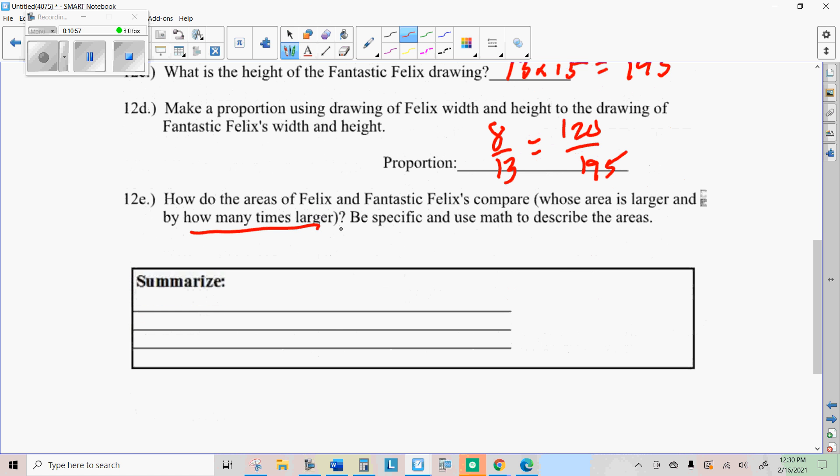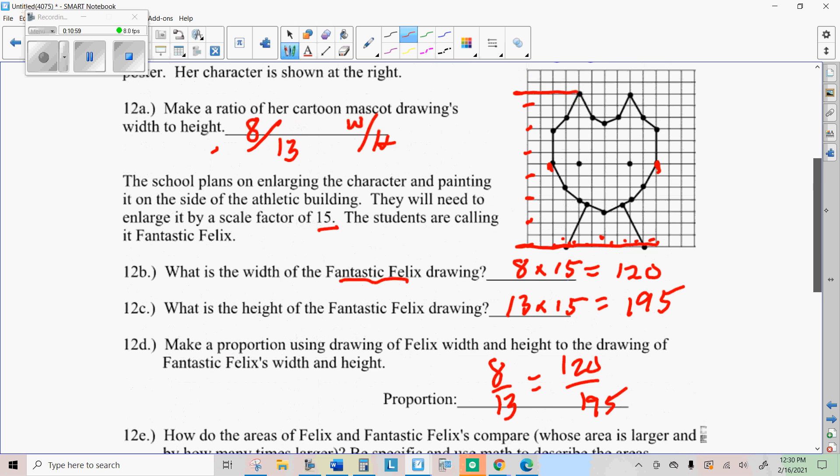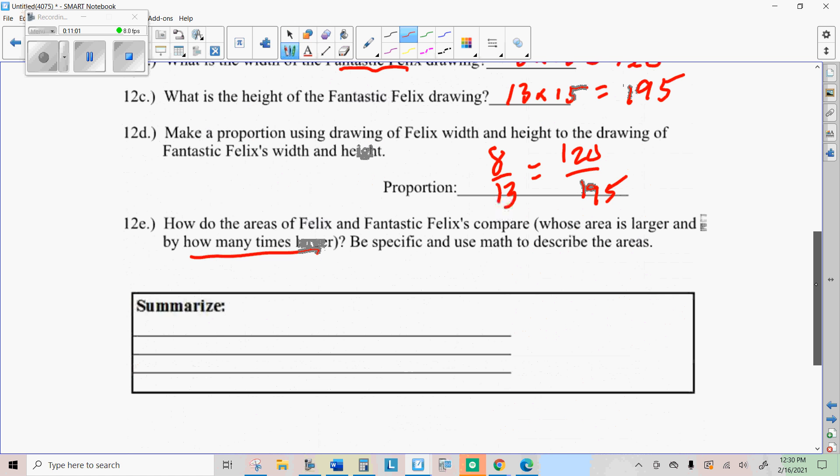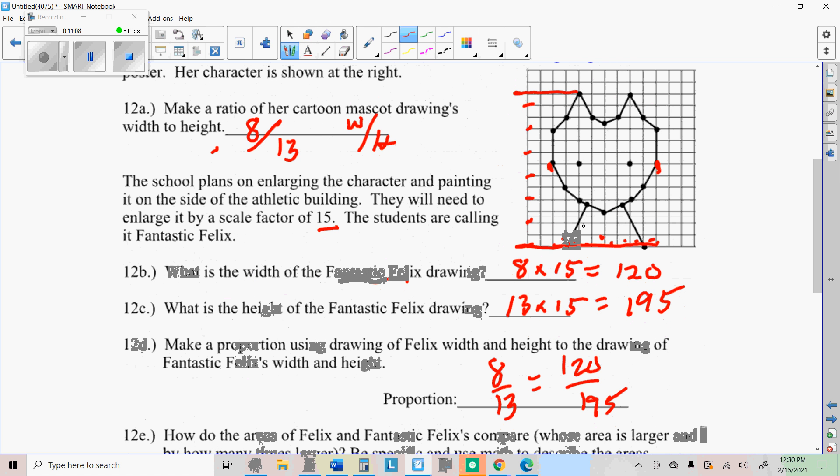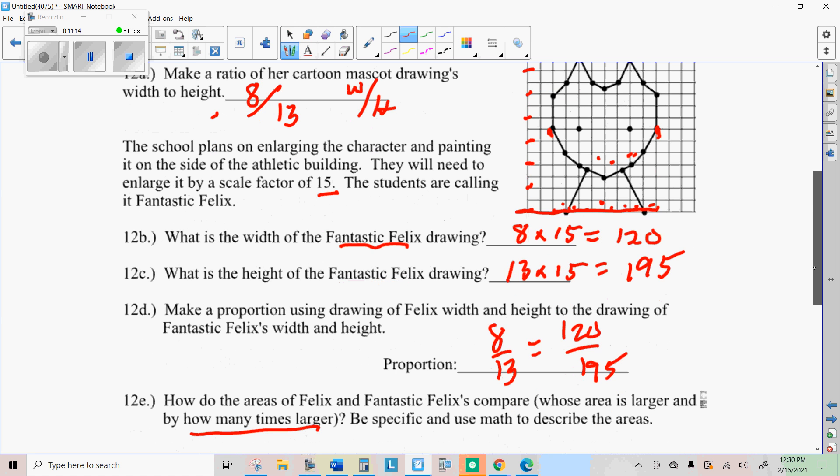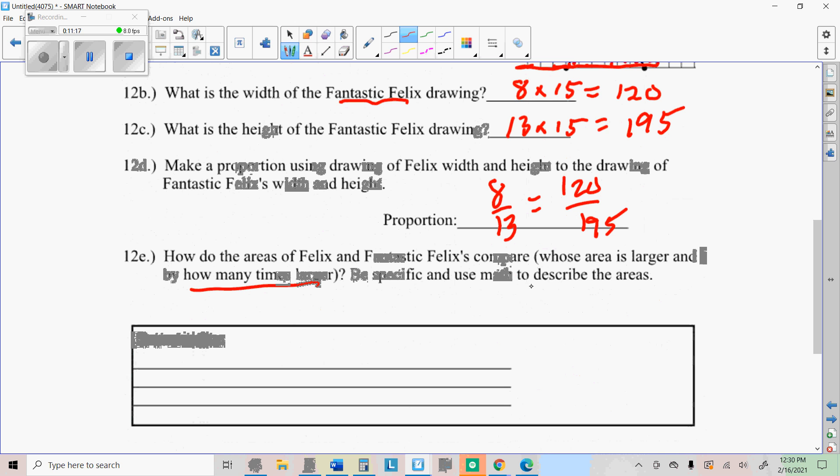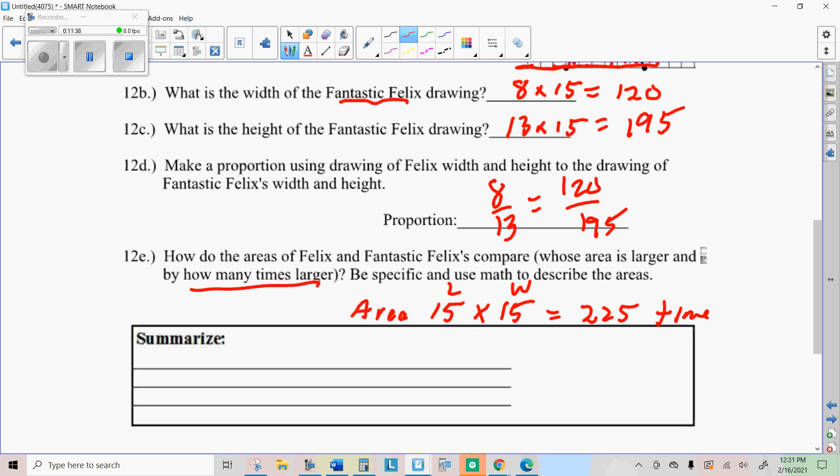So how do the areas compare? We want to know how many times larger the new area is. To figure that out, since it's a little harder to figure out what the area of Felix is, we could actually try and count these squares and see. But this is where our idea comes. We know if we increase the length and the width, both by fifteen, the area will be fifteen times greater in length, fifteen times greater in width. Which means 225 times greater in area.